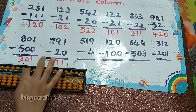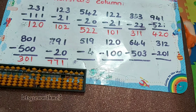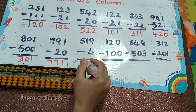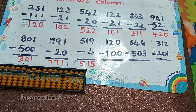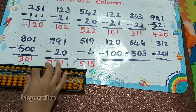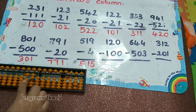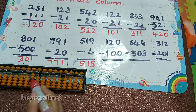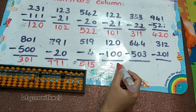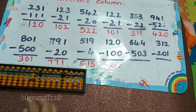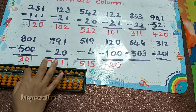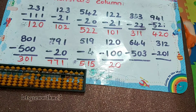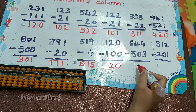Next one: 519 minus 4 — you must use the direct method, so the answer is 515. Next one: 120 minus 100, so the answer is 20. Next one: 644 minus 53, so the answer is 141.